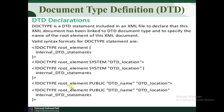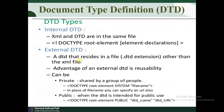When declaring a DTD, we specify the document type, root element, and internal DTD statements. DTD has two types: internal DTD, where the XML and DTD are in the same file, and external DTD, where a separate DTD file with a dot DTD extension is created and referenced from the XML file.